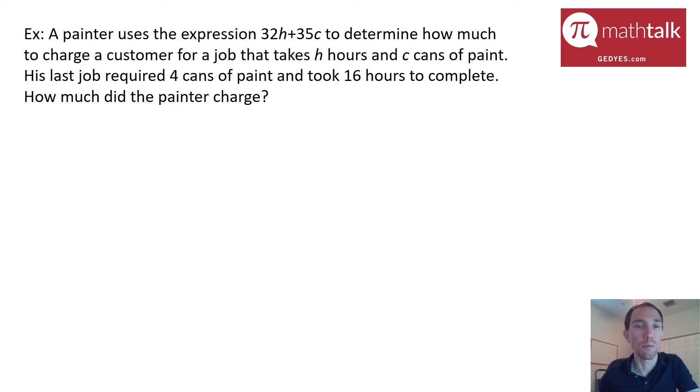In this example we have an equation, we have two variables, and we have the values for each of those variables. Those two variables are H and C and they tell us that C is 4 because C is the cans of paint, H is the number of hours.